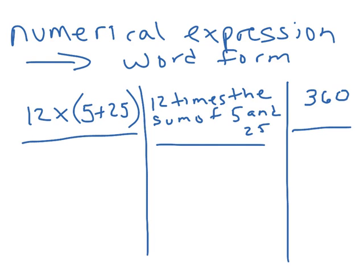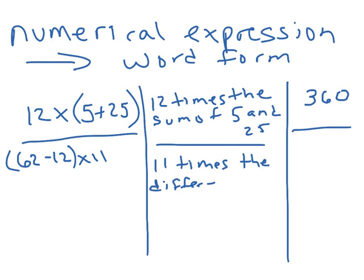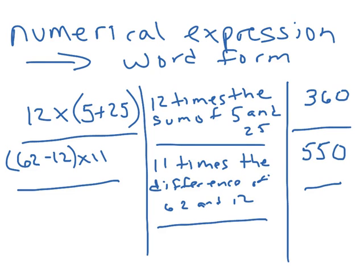The next expression they give us is (62 − 12) × 11. In word form, that is: eleven times the difference of 62 and 12. The difference between 62 and 12 is 50, and 50 times 11: since 5 times 11 is 55, then 50 times 11 would be 550. So the answer is 550 — another example of converting a numerical expression to word form and then solving it.